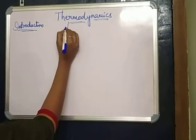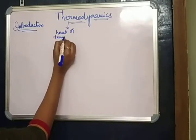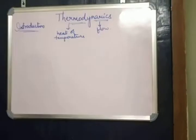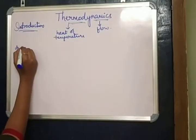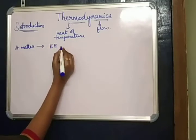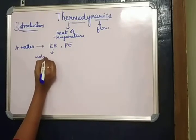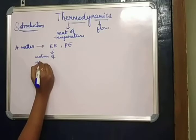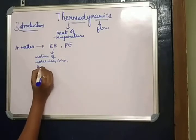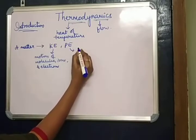The term 'thermos' means heat or temperature, and 'dynamics' means flow. A matter must possess both potential energy as well as kinetic energy. This kinetic energy is because of motion of molecules, ions and electrons, while potential energy is by virtue of its position.